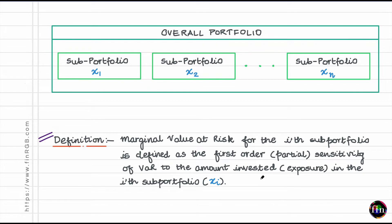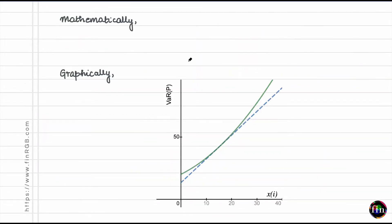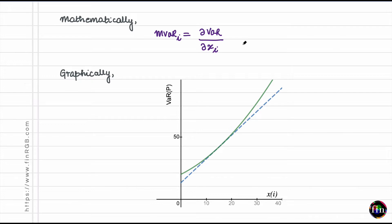Mathematically, therefore, for the ith sub-portfolio, I can define the marginal VAR to be equal to the partial derivative of the overall portfolio VAR with respect to X_i — the amount invested in the ith sub-portfolio. This partial derivative is computed assuming that the allocations to all other sub-portfolios, except the ith one, stay unchanged.